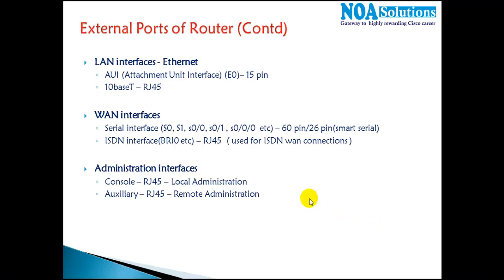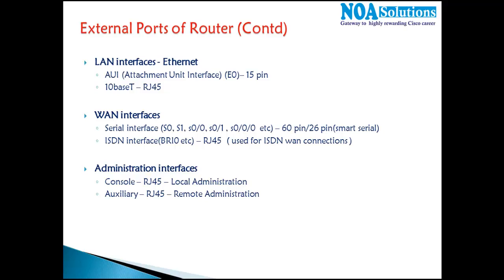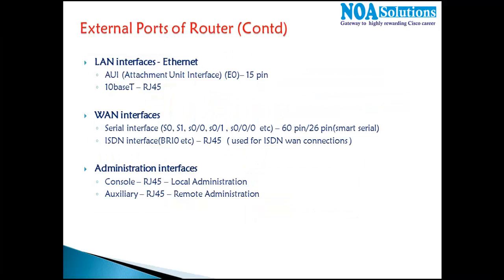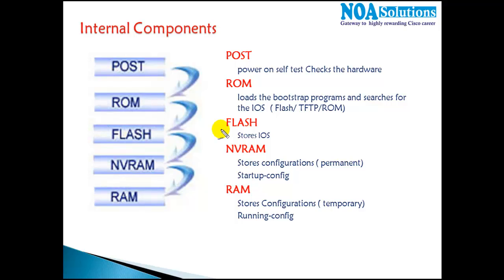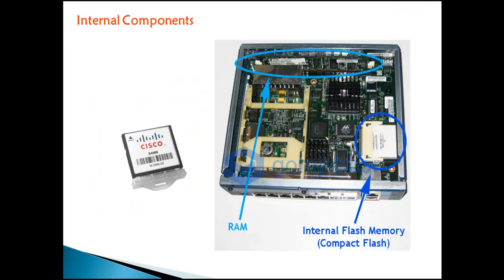In this section we are going to continue with routers and look at the internal components of the router. In the previous section we saw the different kinds of ports found on routers. Now we'll see what are the major components inside the router. We are not going to do any hardware modifications on Cisco routers — we are just trying to understand the different internal components and what each one does.